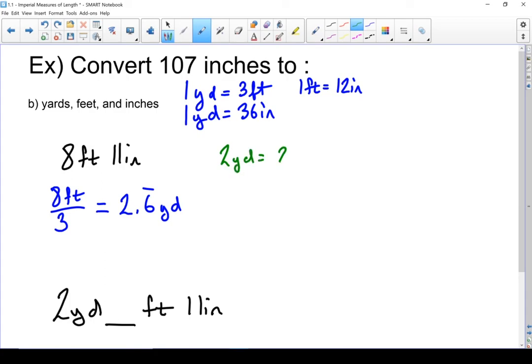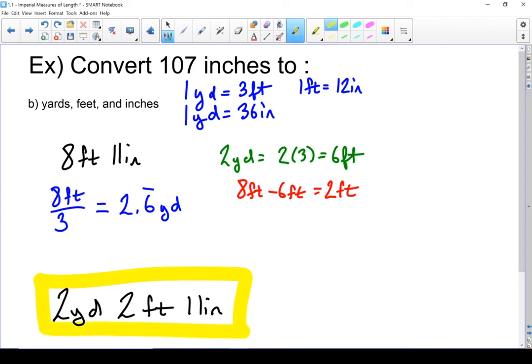2 yards equals 2 times 3 equals 6 feet. So my remainder, I'm going to take the 8 feet that I started with, subtract off the 6 feet that we converted up into yards. I'm left with 2 feet. So my end answer is 2 yards, 2 feet, and 11 inches. There's my final conversion.